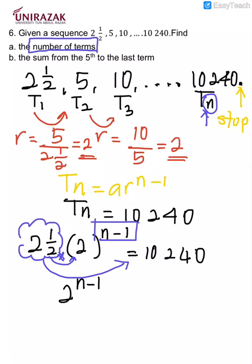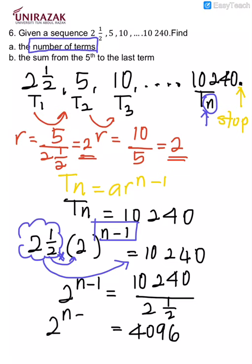10,240 divided by 2 and 1 over 2 - you have a calculator, so when you divide this with the calculator you're going to get 4,096. This is what you will get first.